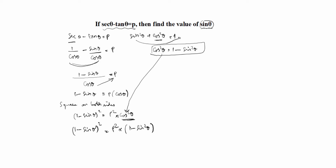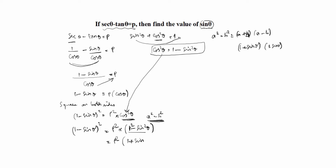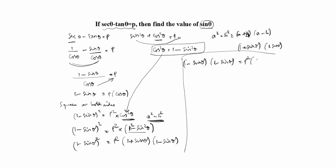Now, what is 1 minus sine squared theta? Since 1 is 1 squared, this is an a squared minus b squared formula. A squared minus b squared equals a plus b times a minus b. So we write 1 minus sine squared theta as 1 plus sine theta into 1 minus sine theta.